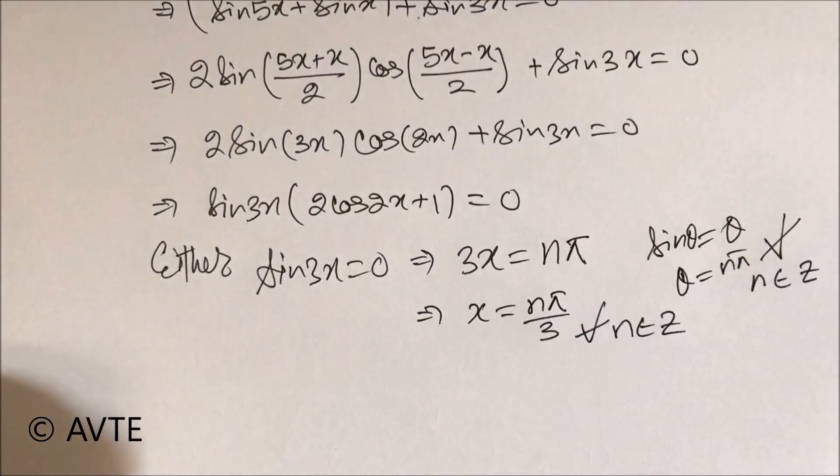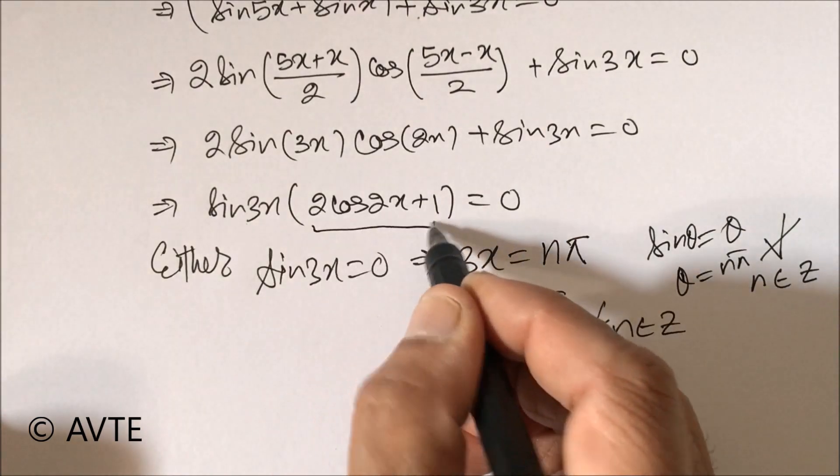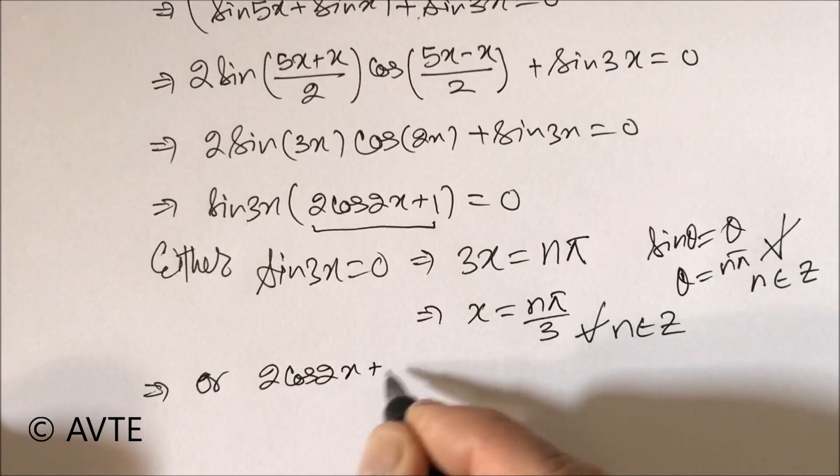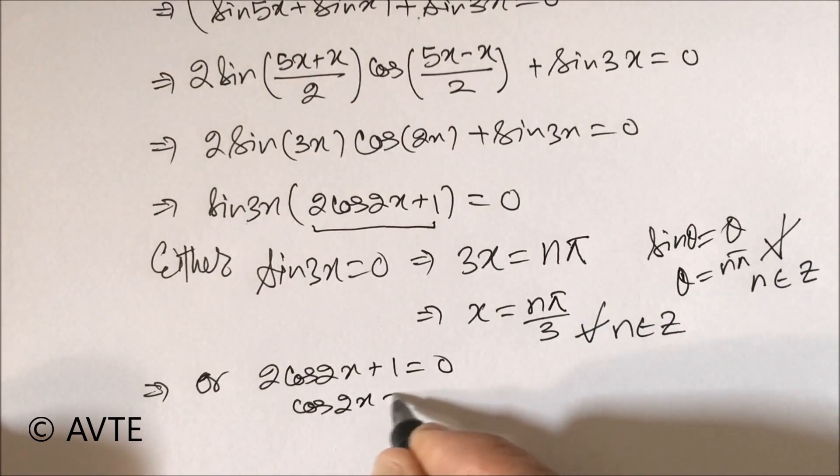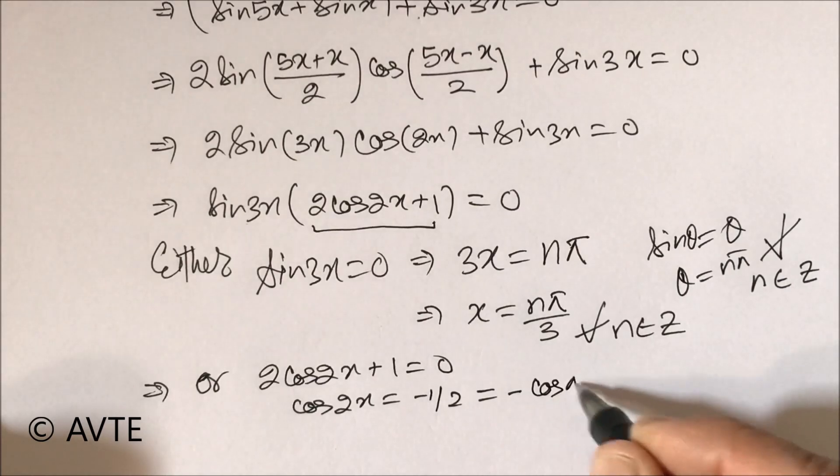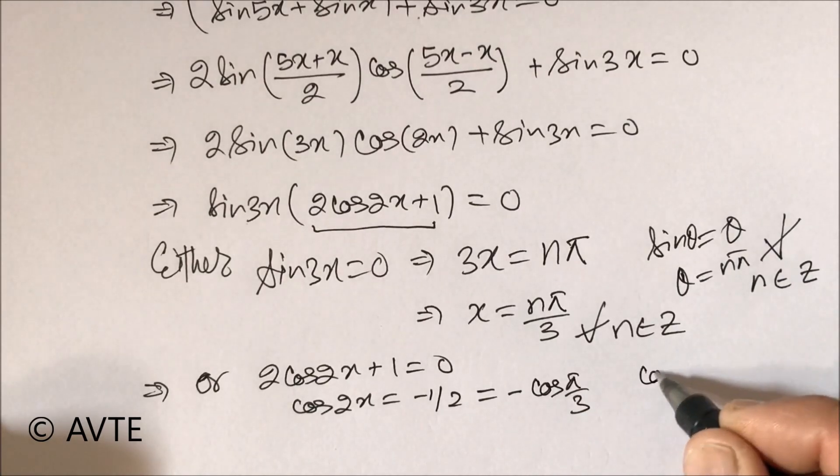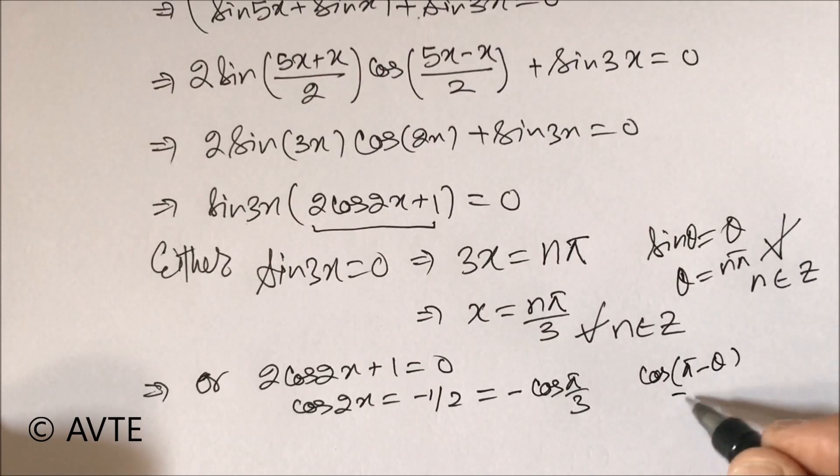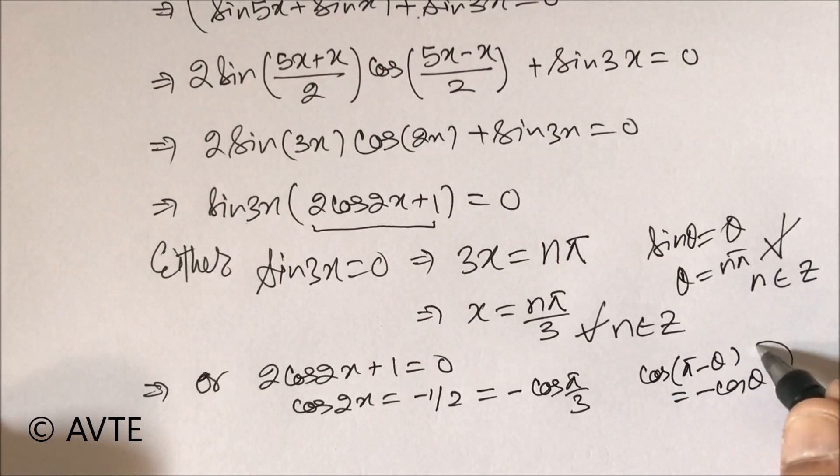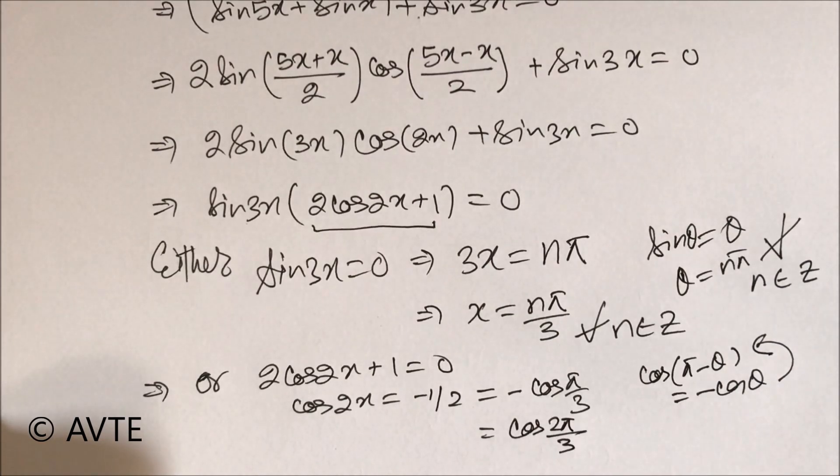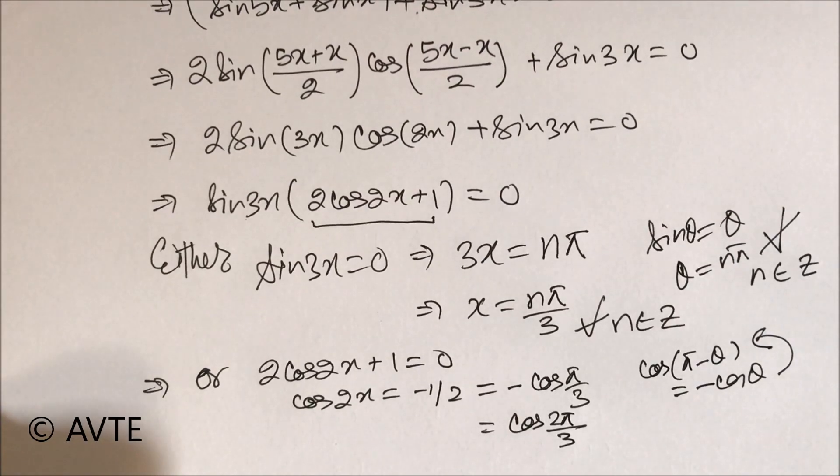And now coming on to the second factor which is this. And now there is a trick. So what is 1 by 2? That is cos of pi by 3. And what is cos 180 minus theta? That is minus cos theta and vice versa. So I can write this as pi minus pi by 3 which is 2 pi by 3. So this 2 pi by 3 is actually 120.